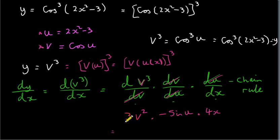So what we get is 4x times 3, that's 12x times v squared. Well, if we go back up here, we can see that v is the cos of u. And what is u? u is 2x squared minus 3. And we want to square this. This is v squared. But of course, we don't write the 2 out there.